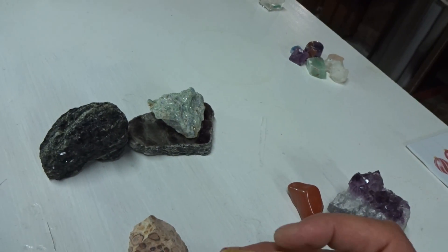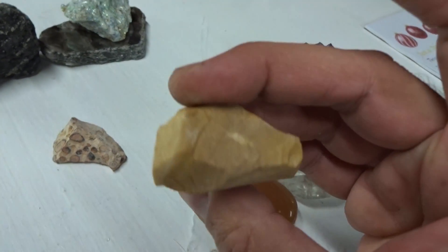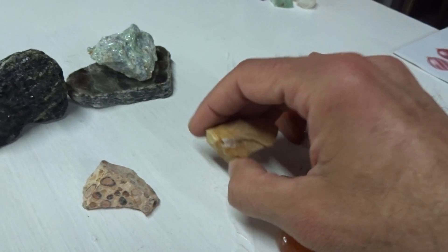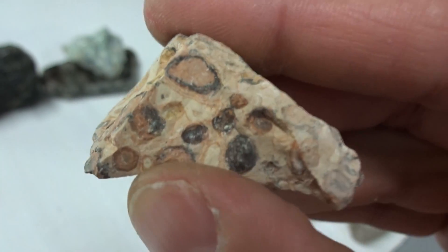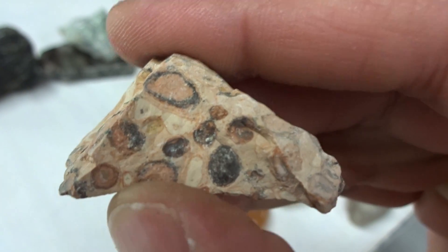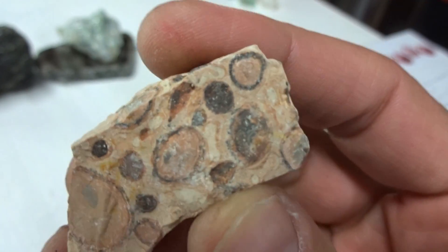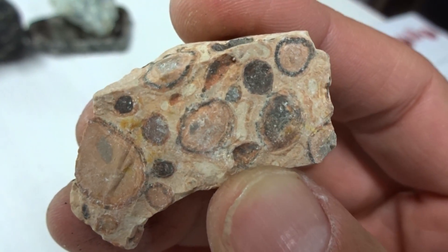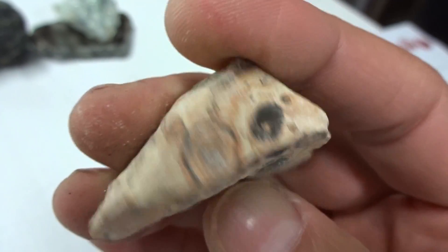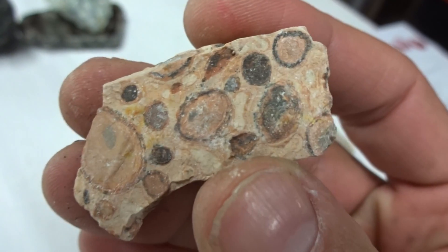And then we have jasper. This is sort of a brownish jasper. This is another form of jasper. I can't think of the name of this jasper. This is leopard jasper.